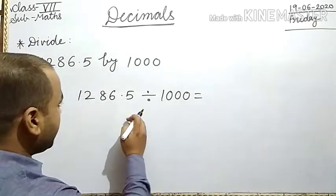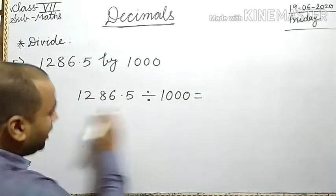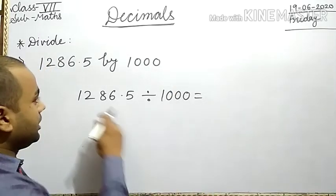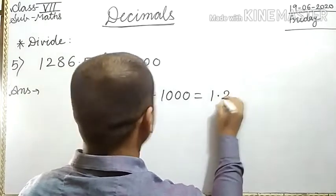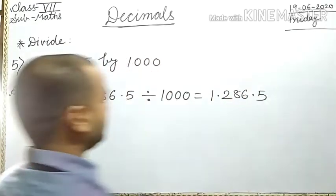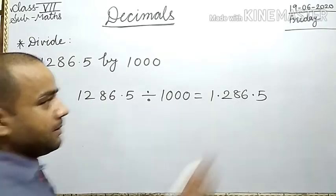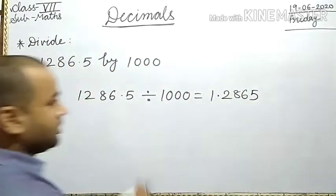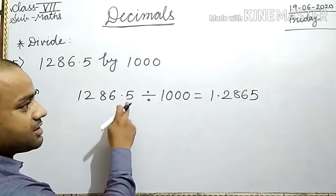Shift the decimal point to the left by three places when divided by 1000. Three places means 1.2865.